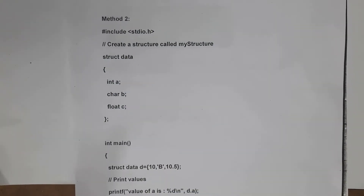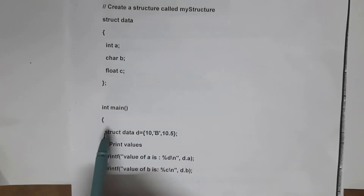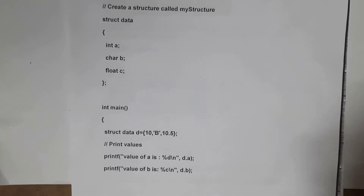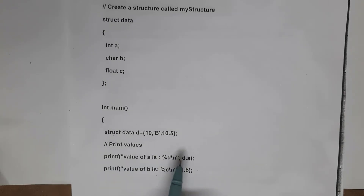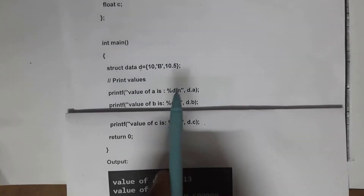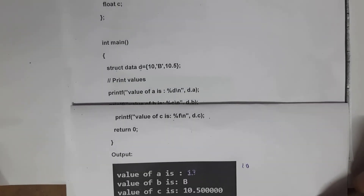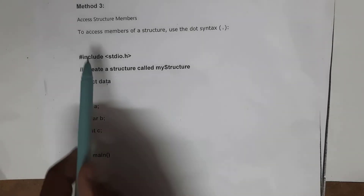This is the second way of assigning values to structures. Here the structure 'data' is declared outside main with members int a, char b, float c, closed with a semicolon. Then inside main, I write 'struct data d = {10, 'b', 10.5}', where values are given inside curly brackets closed with a semicolon. Then printf statements use d.a, d.b, d.c. Output: value of a is 10, value of b is b, value of c is 10.50.